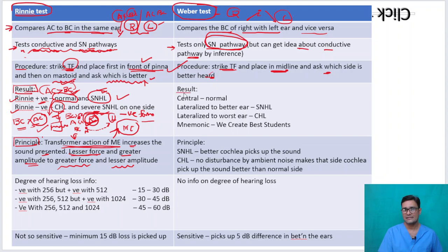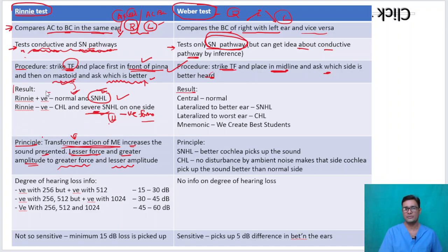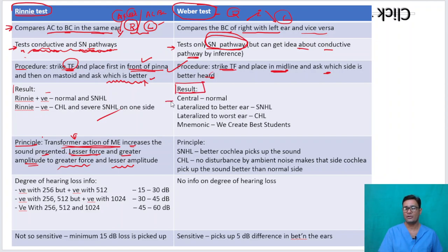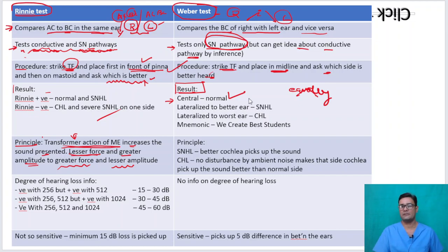What are the results of Weber's test? Weber is central — the patient hears equally on both sides — which means both sides are normal. Rarely, a patient with equal sensorineural hearing loss on both sides will also hear equally on both sides, but that is a rare instance.